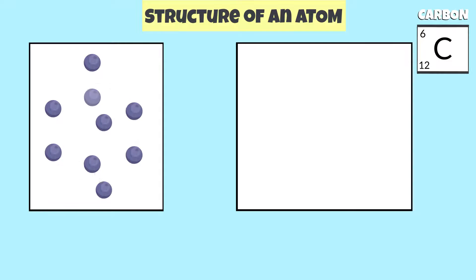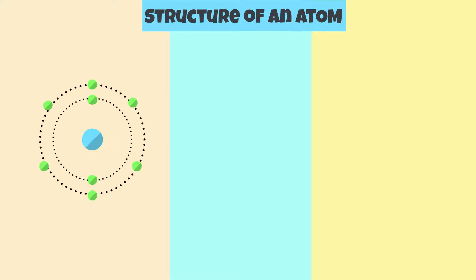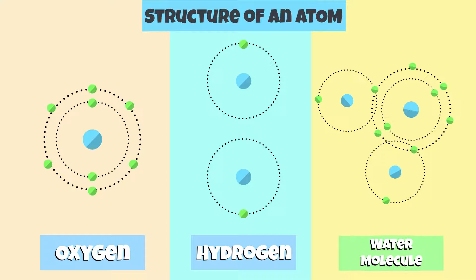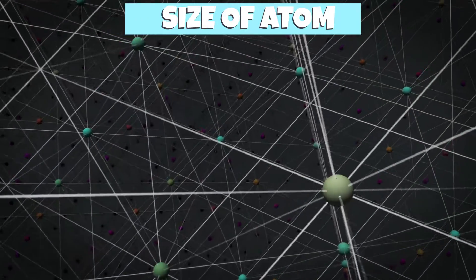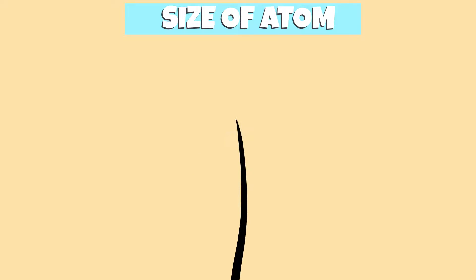All of the different physical and chemical properties of an element are determined by the arrangement of atoms. Just as elements combine together to form compounds, atoms combine together to form molecules. An atom is so tiny that if we arrange a million atoms in a row, their length would be the same as the thickness of a single hair strand.